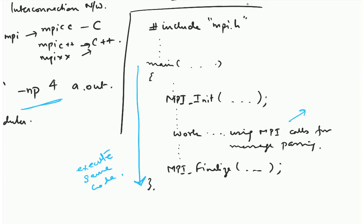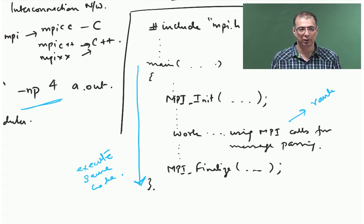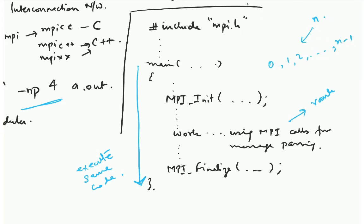There is a way to identify yourself using your rank. If there are n processes, they get ranks from 0, 1, 2, all the way up to n minus 1. You can check what rank you have and based on that you can do computations appropriately. That way you can distribute the work, that is how you write the program.